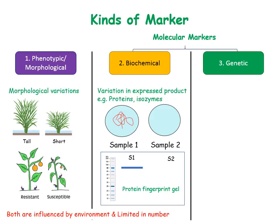Genetic markers, also known as DNA markers, evaluate variation in individuals based on variation in their DNA sequences. Examples of these markers are RAPD, RFLP, AFLP, SSR, and SNP.